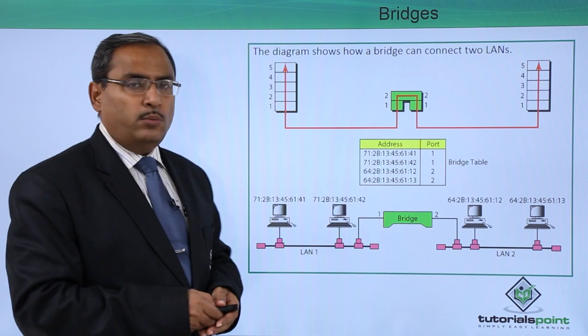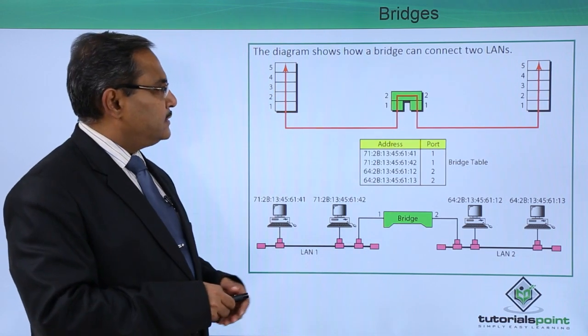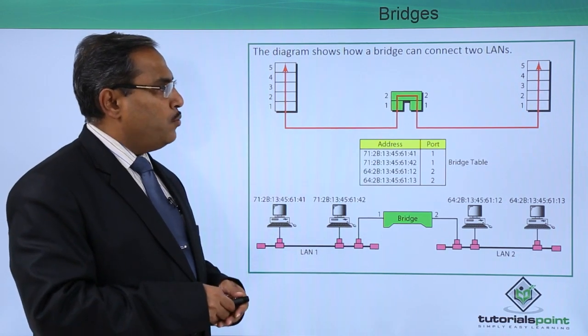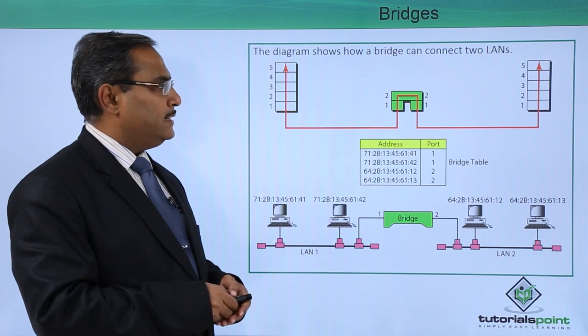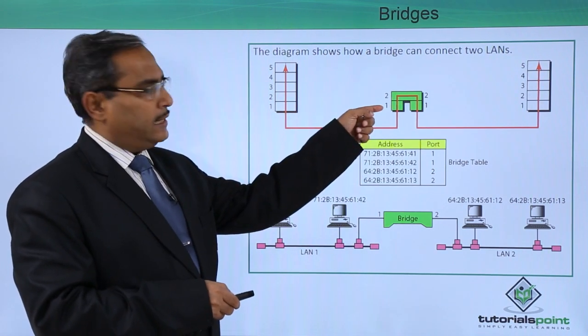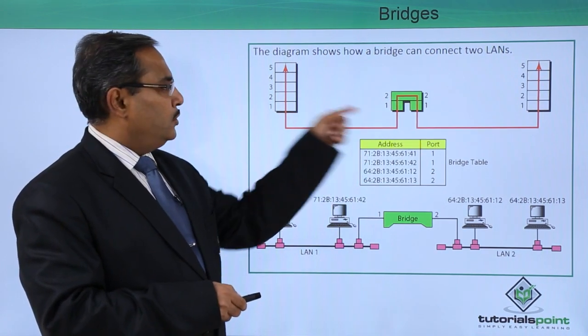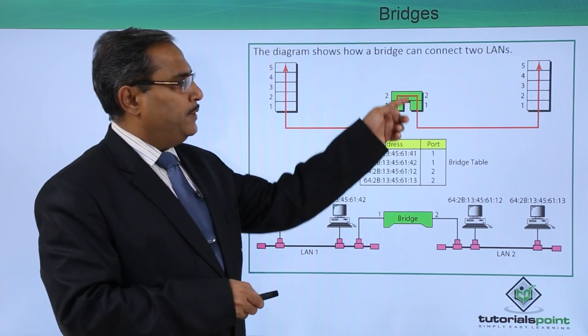Now here we are having one diagram. The diagram shows how a bridge can connect two LANs. You can see, this is the physical layer, this is the data link layer. That is the way in which the bridge is working.